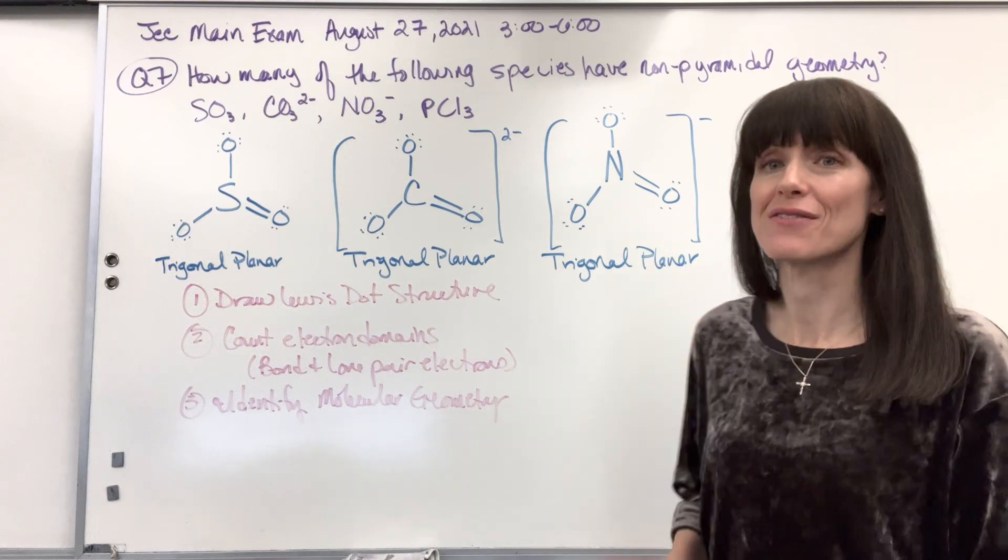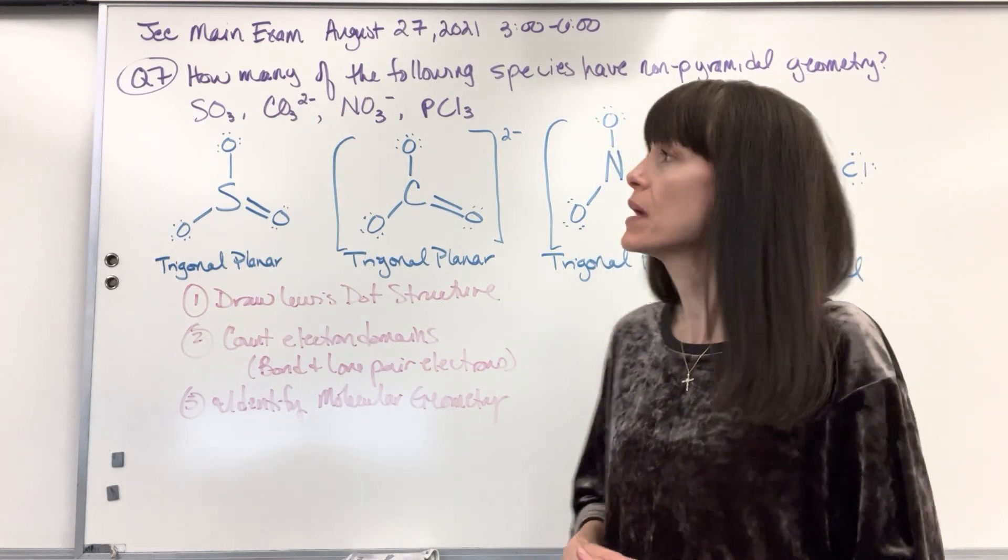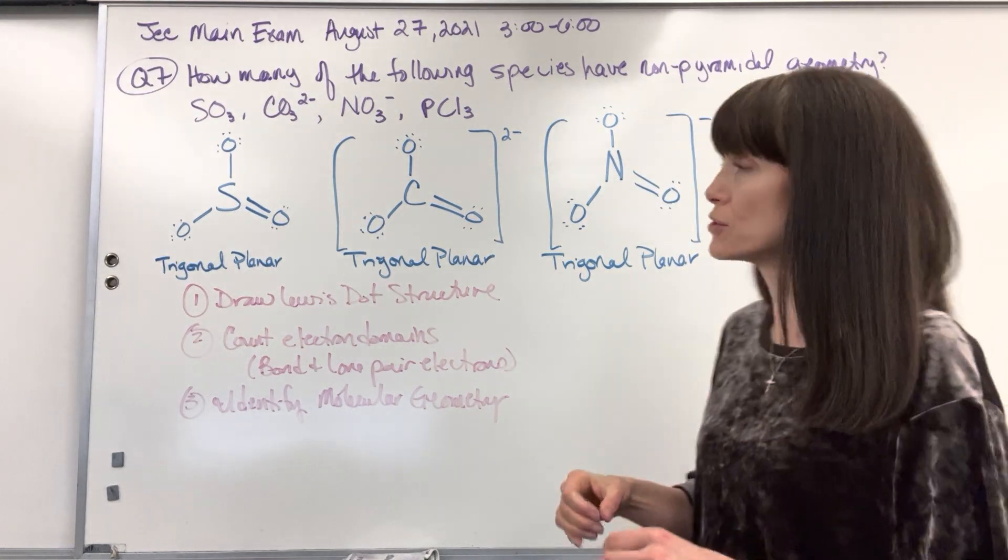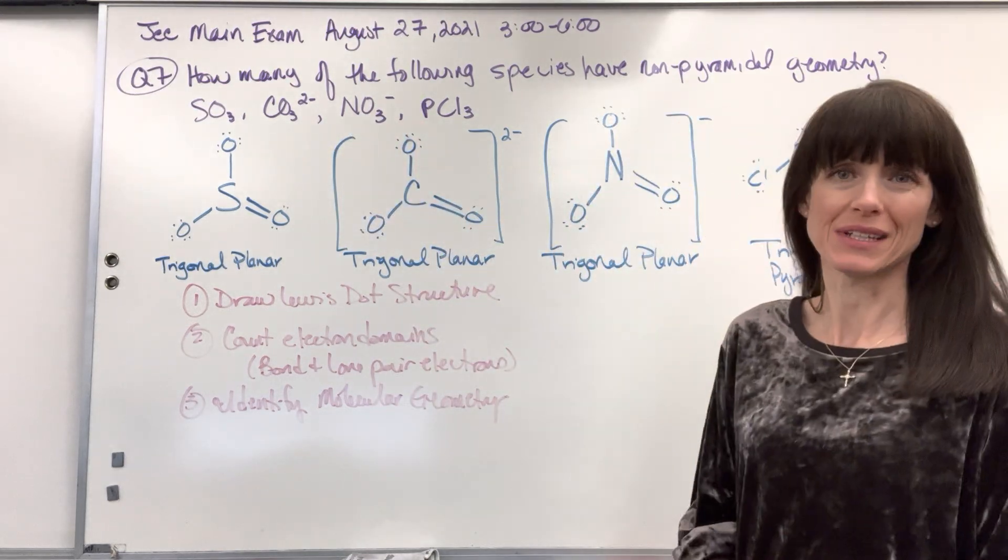So this is looking at VSEPR, valence shell electron pair repulsion. We're looking at geometries. Let's read the question. It says, how many of the following species have non-pyramidal geometry? And then they give us four molecules that we need to look at.